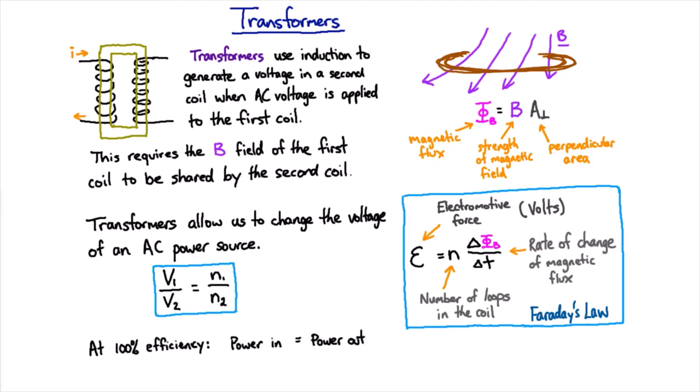We can remember the formula for power in electrical circuits because it's just the energy per unit time. The voltage is the energy per unit charge, and the current is the charge per unit time, so the power is just the voltage times the current.